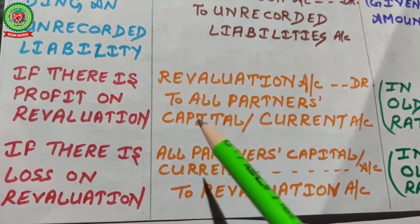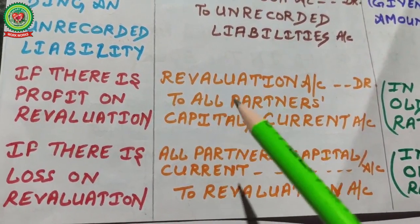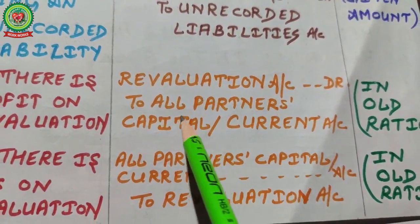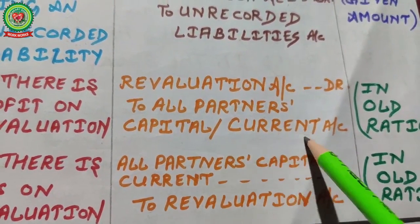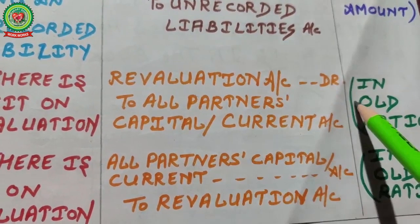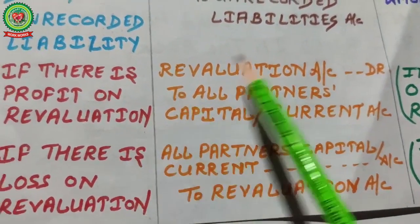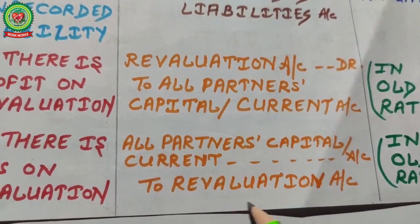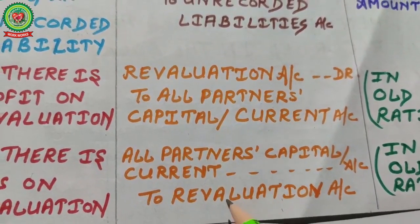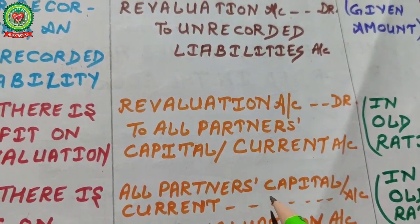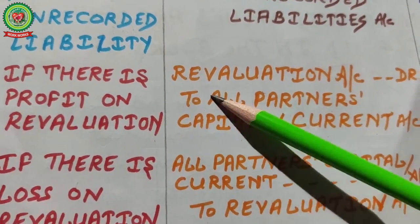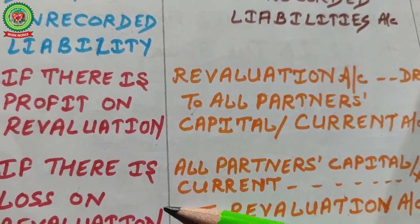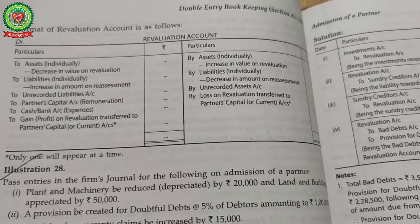For transfer entries: if there is a profit on revaluation, the entry is: Revaluation Account debited, All Partners' Capital/Current Account credited — in old ratio. If there is a loss on revaluation, the entry is: All Partners' Capital/Current Account debited, Revaluation Account credited — in old ratio. These are the two balancing entries at the end, whether profit or loss.